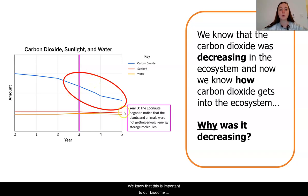We know that this is important to our biodome because carbon dioxide is something that is necessary to make those energy storage molecules. In your exit ticket today, you are going to look at some more evidence from the biodome to try and understand why this carbon dioxide was decreasing.